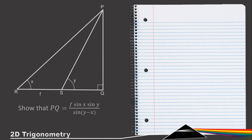We want to find a link between the two triangles. The side that links them is PS. Our strategy is to get PQ in terms of PS, then get PS in terms of f, and then substitute.